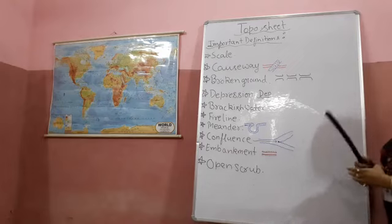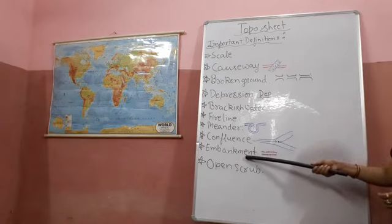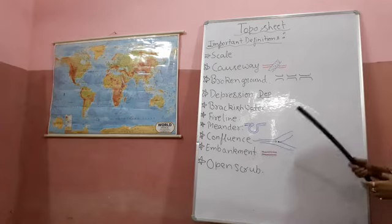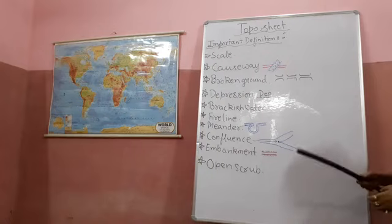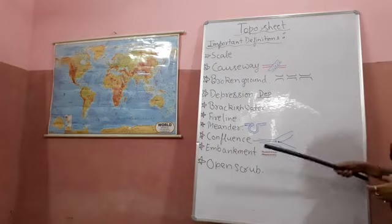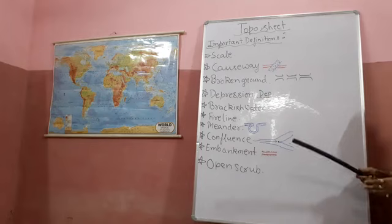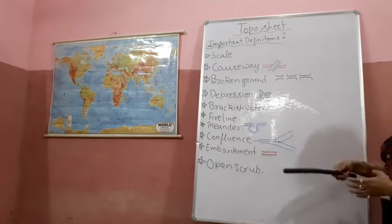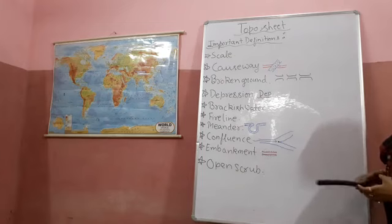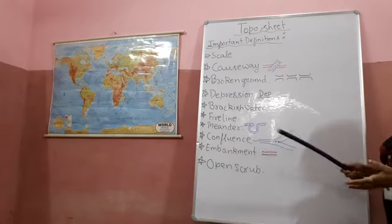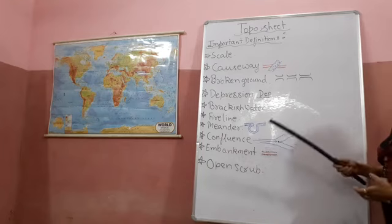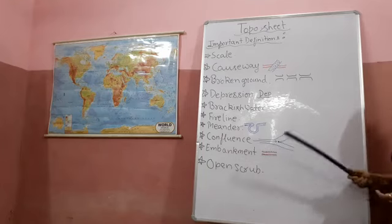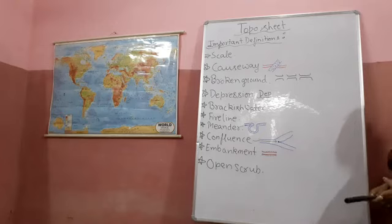Now next is embankment. These are the walls constructed around tanks or canals to prevent flooding. If these walls are not there, water will come out and cause a lot of problems for the adjoining areas — more soil erosion and all related problems will occur. Because of that reason, these embankments are constructed.